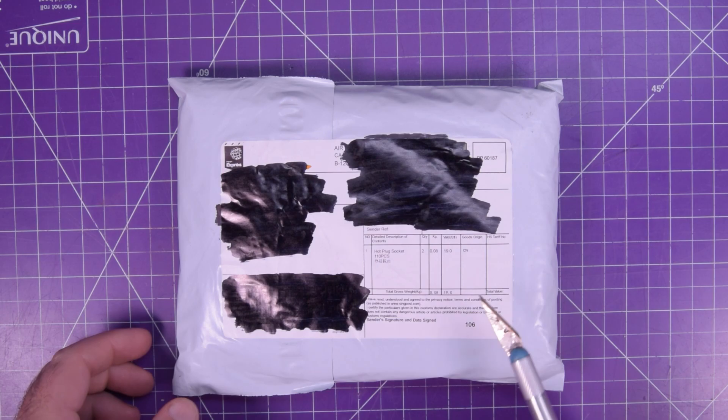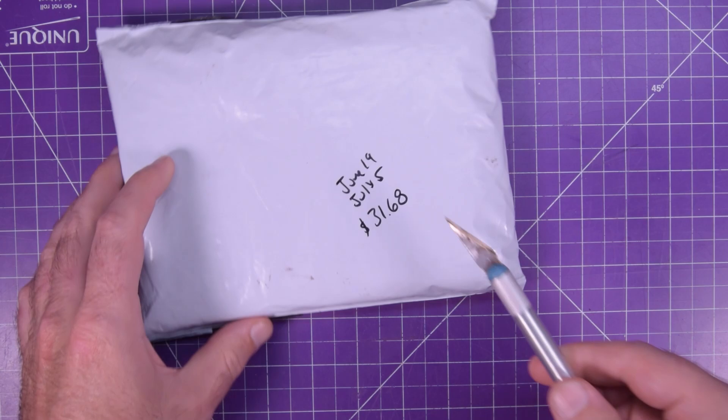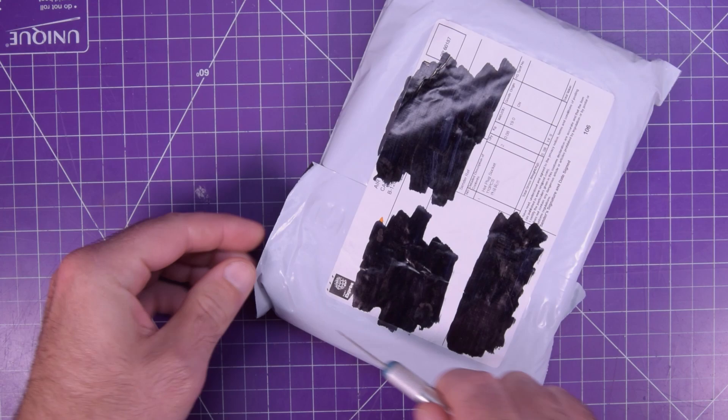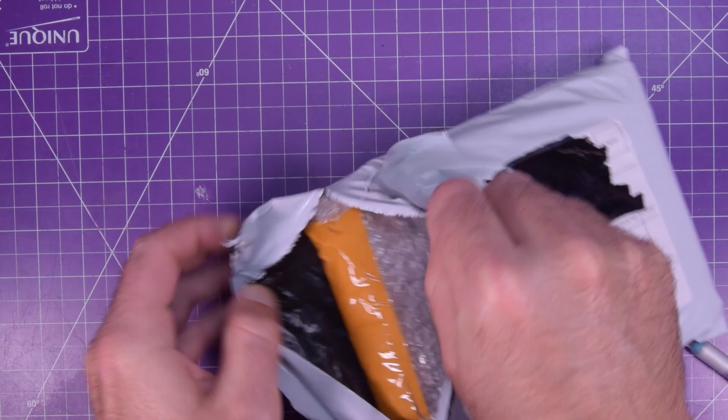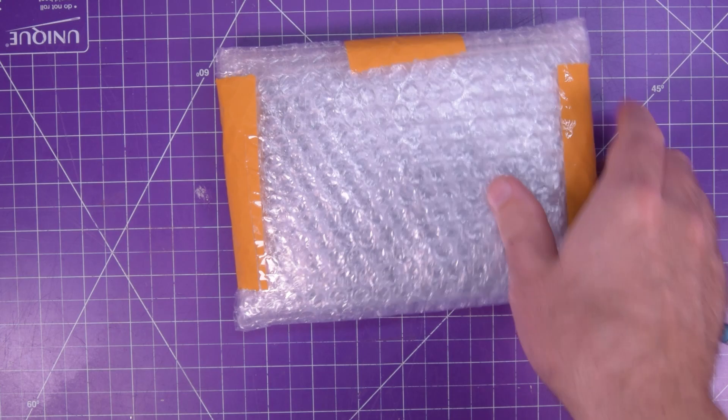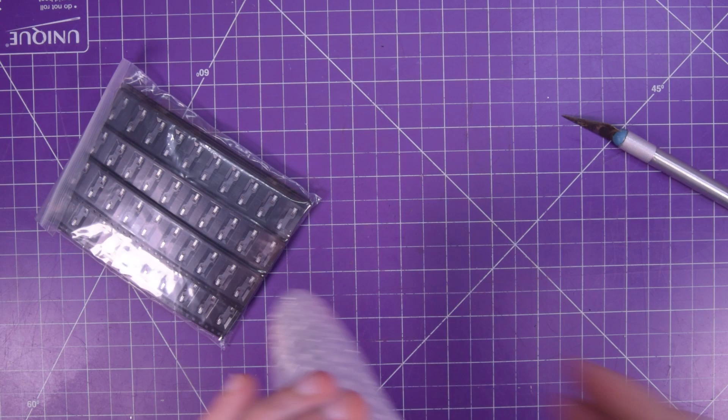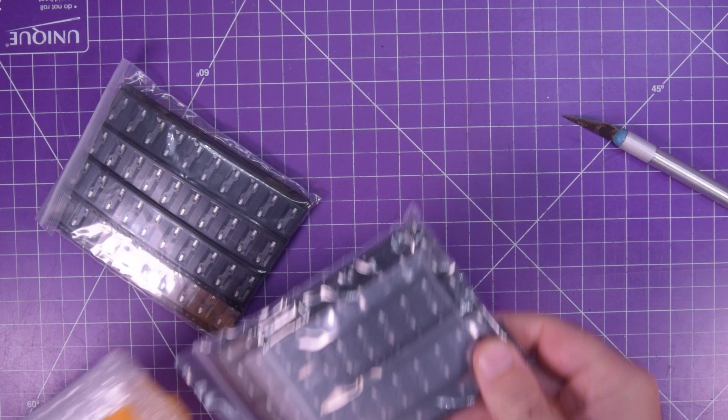Gonna start with this one here because I'm curious to see if they'll fit my PCB designs. June 19th ordered, July 5th arrived, $31.68. It says here hot plug socket, 110 pieces. I'm going to try to cut this carefully because I don't know how they're packaged. They're very well packaged. So there should be 220 pieces here, 110 times 2.